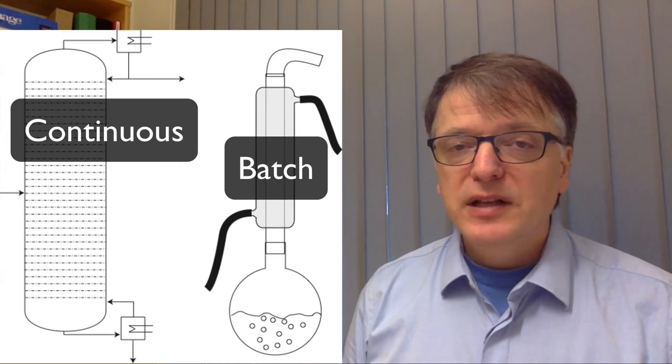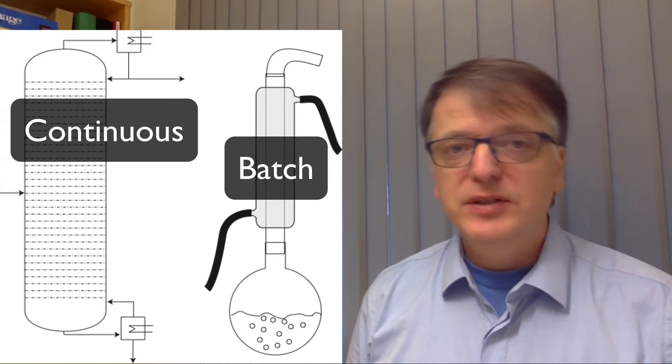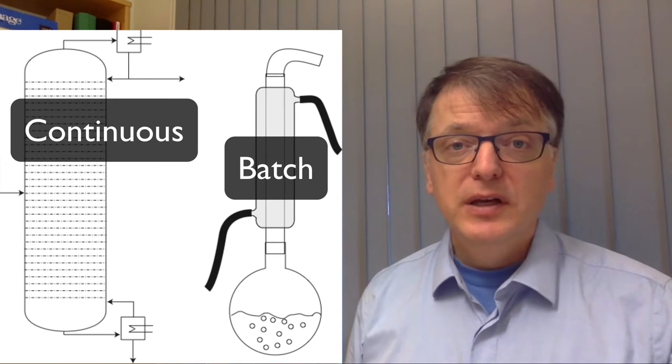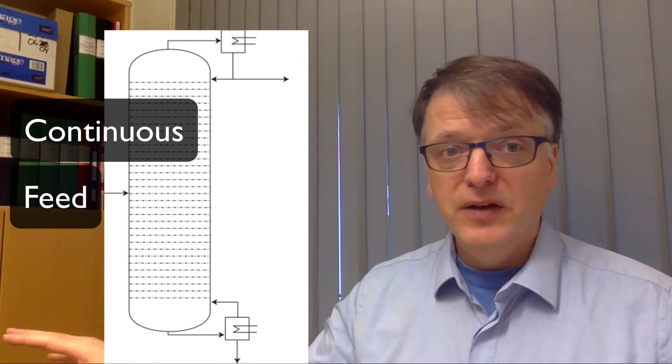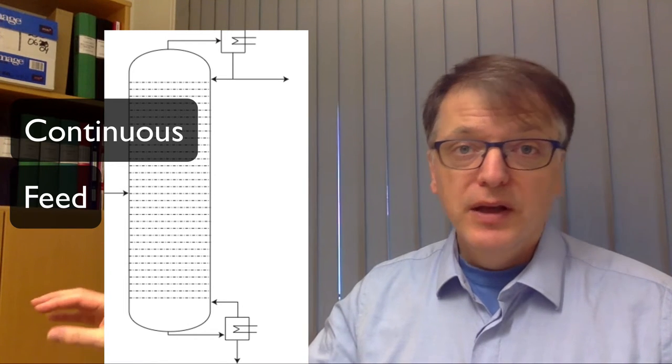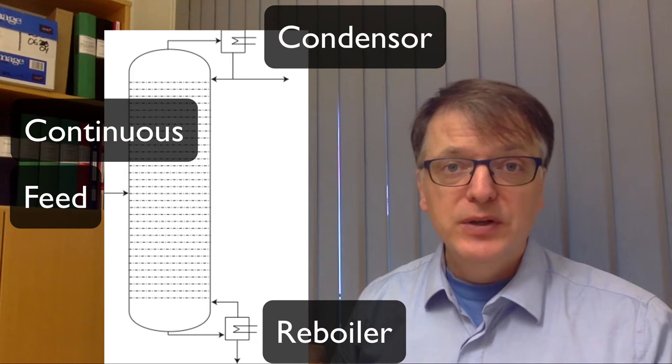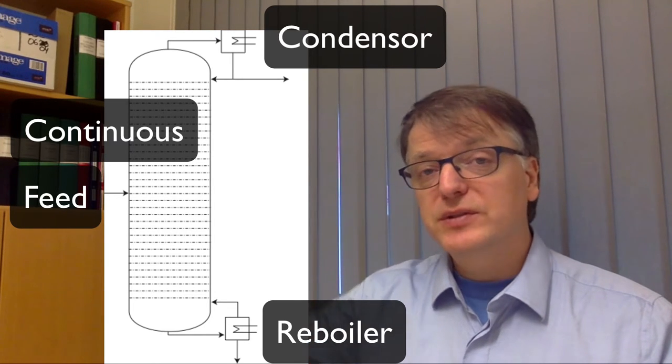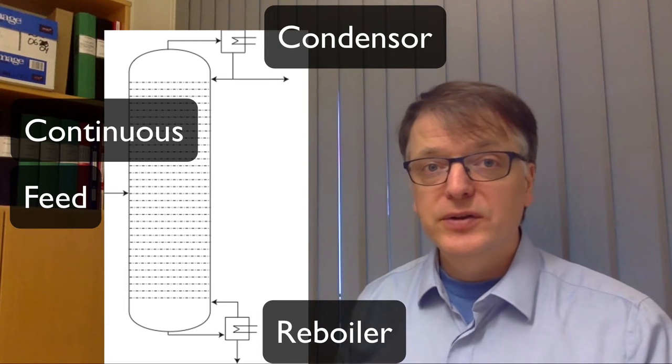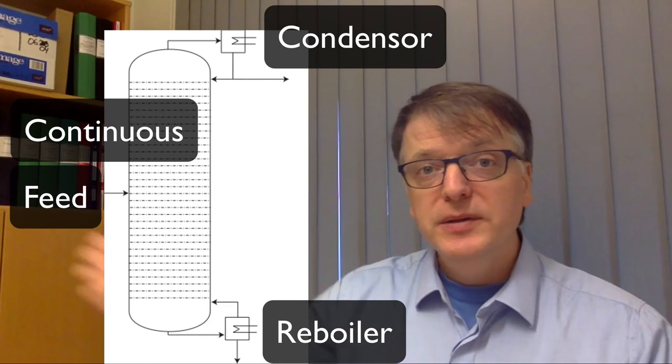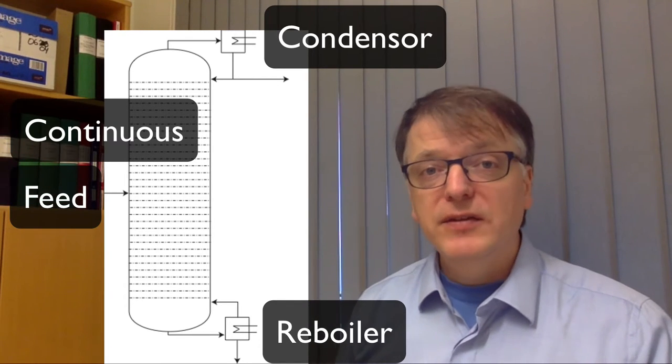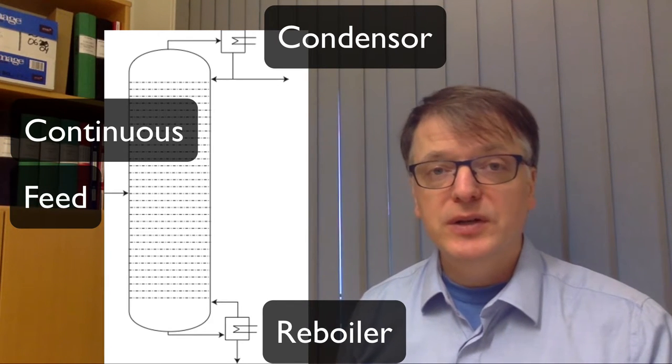The standard distillation column out in the industry is typically a continuous column. So you have a feed somewhere in the middle, and then you have a reboiler at the bottom that takes the liquid that comes down and evaporates part of it so that you form a gas that goes up through the column. And then towards the top you have a condenser which cools down the vapor and turns it to a liquid, especially if it's a total condenser it turns everything into a liquid and then gives some of the liquid back to the column.